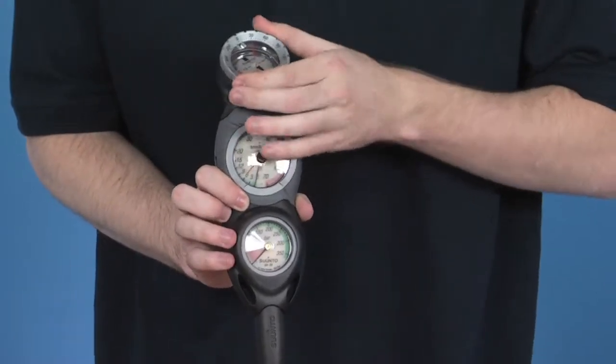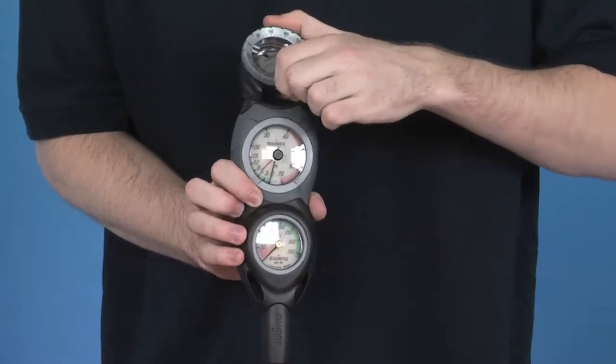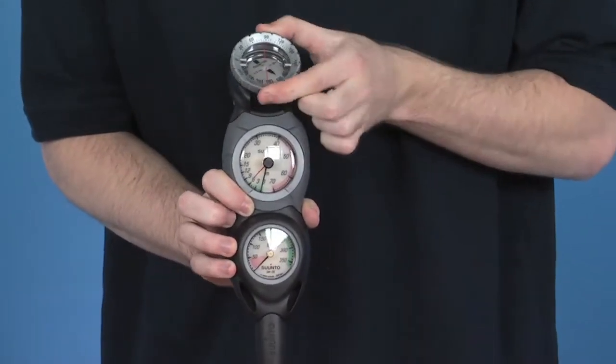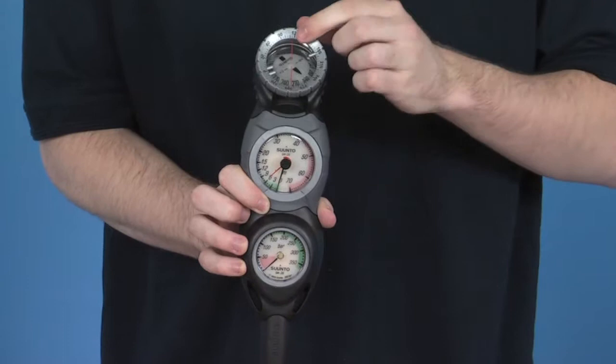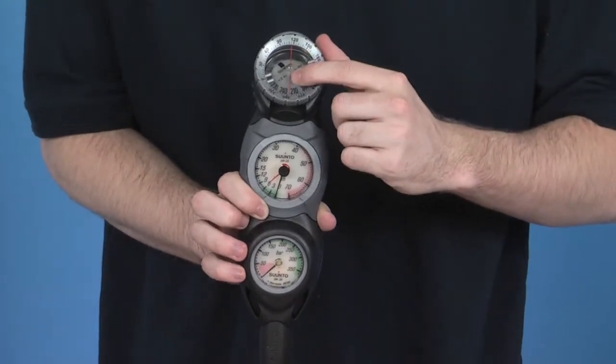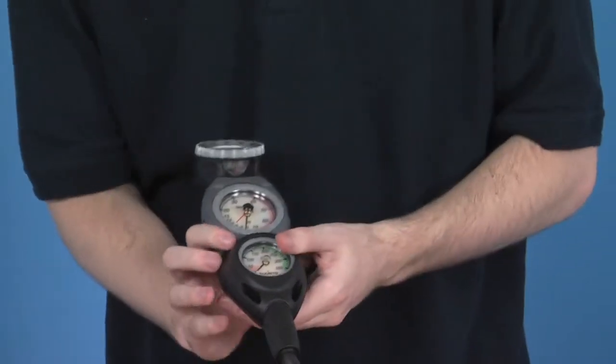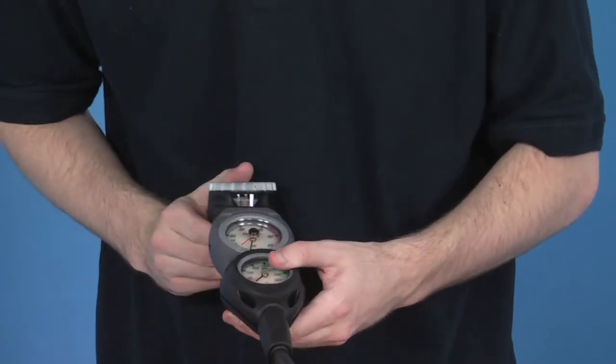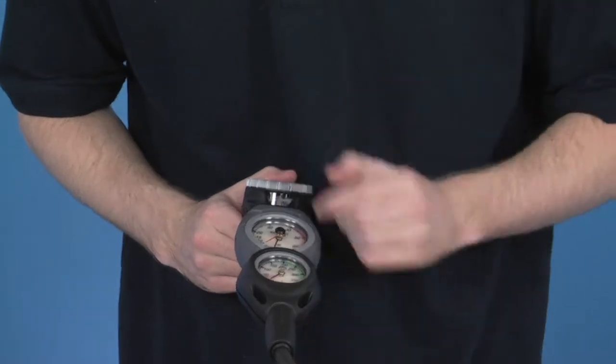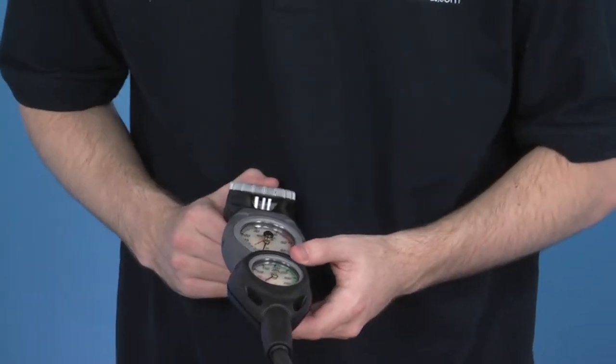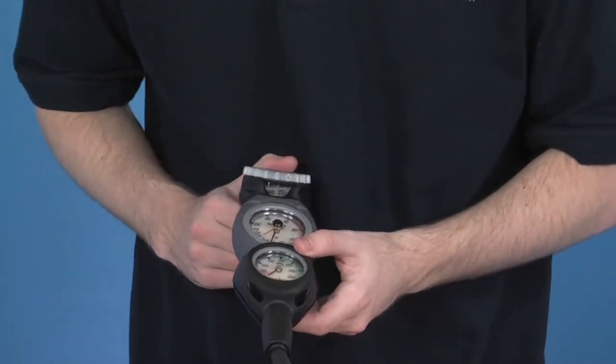On top, you have the SK7 compass with an adjustable bezel. There's a red line which runs right through the middle of the compass. You can see there's a small window at the bottom. The red line is there for more accurate readings and aids with navigation.